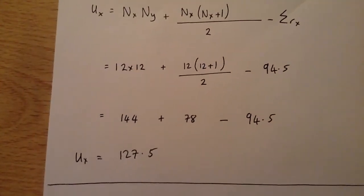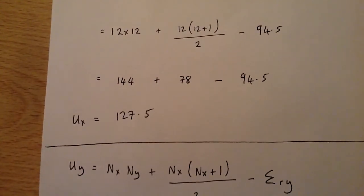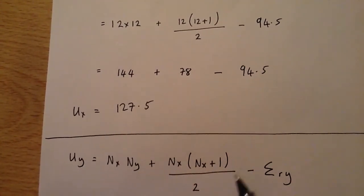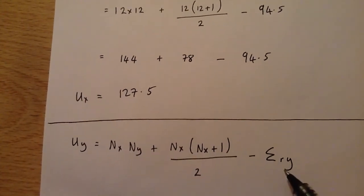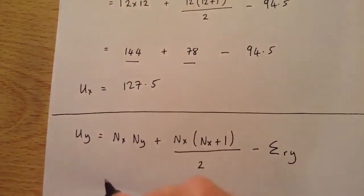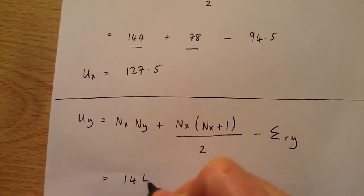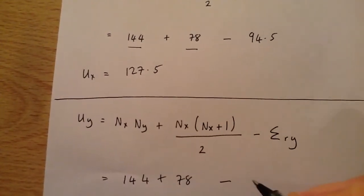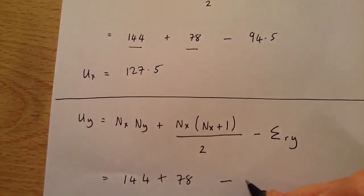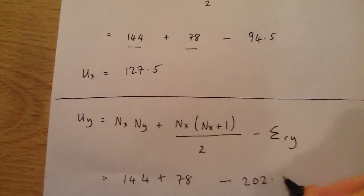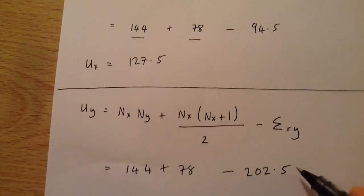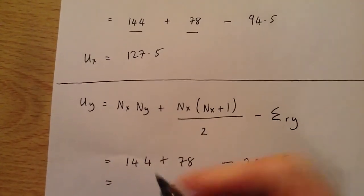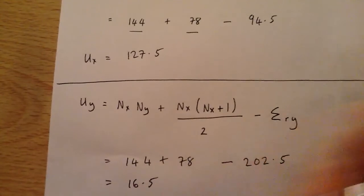We then do the same for Uy using exactly the same formula, but this time subtracting the sum of rank Y. We have 144, plus 78, just like before — but this time we minus 205.5, which was our Y column sum. Uy comes out to 16.5.